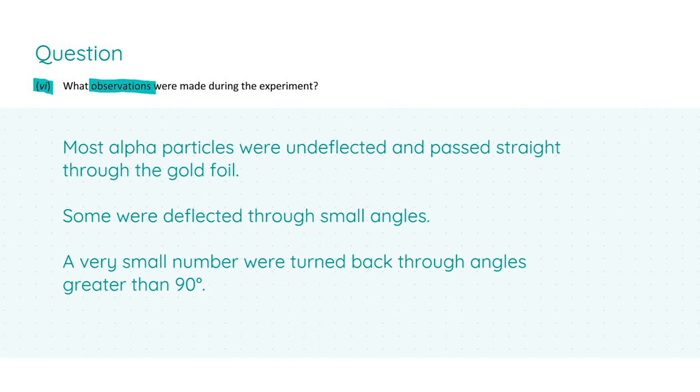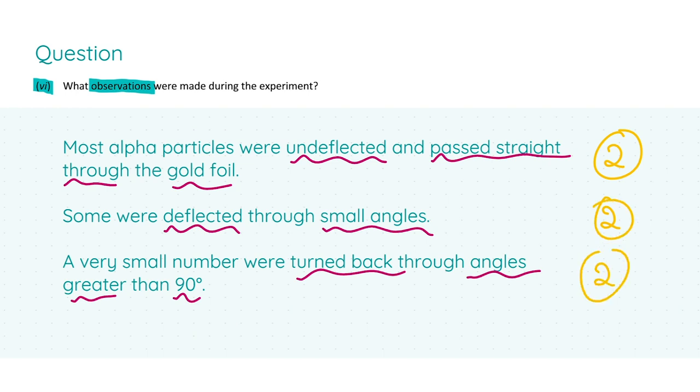In part 6, we're asked what observations were made during the experiment. Three observations were made during this experiment, and they concerned what happens to the alpha particles as they go through the foil. It was observed that most alpha particles were undeflected and they passed straight through the gold foil. Some were deflected through small angles, but a very small number would turn back through angles greater than 90 degrees. Each correct answer will get you two marks each, giving a total of six.